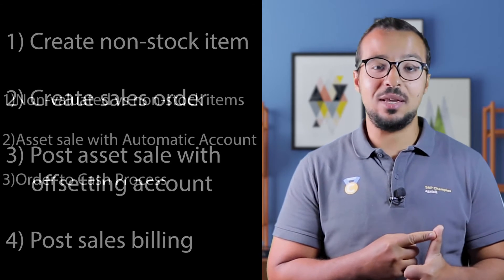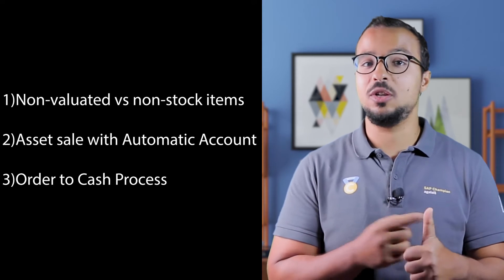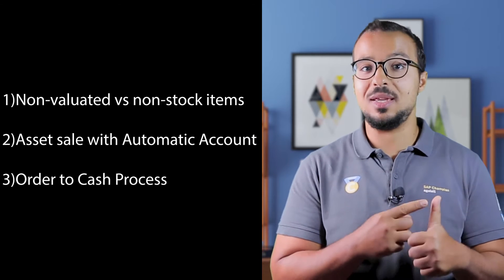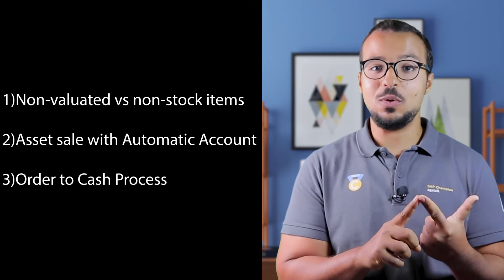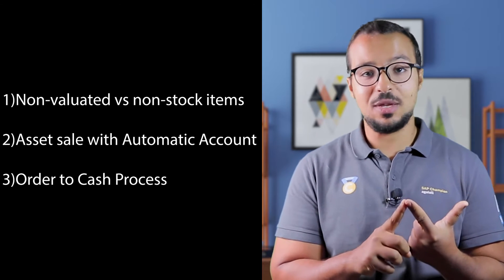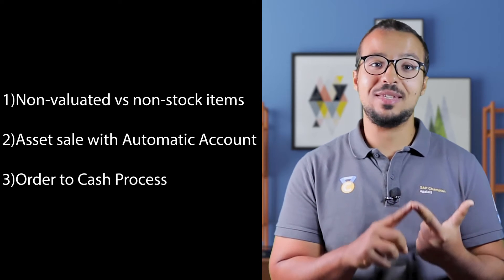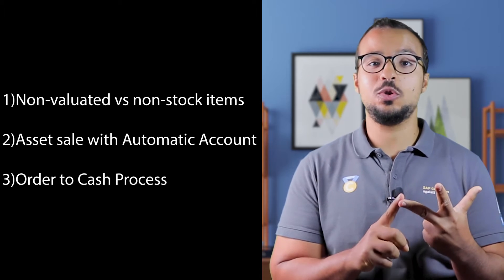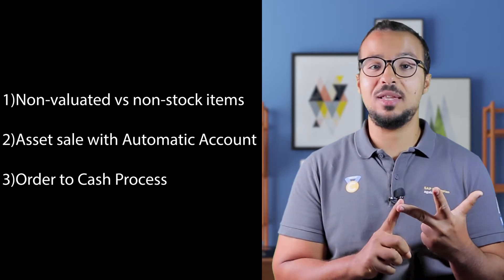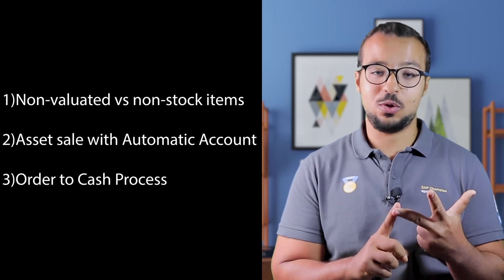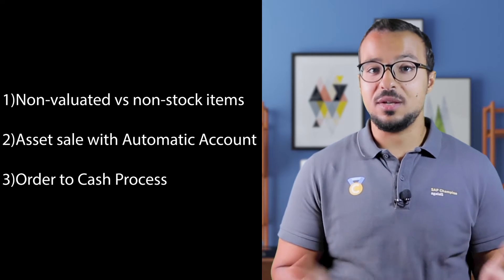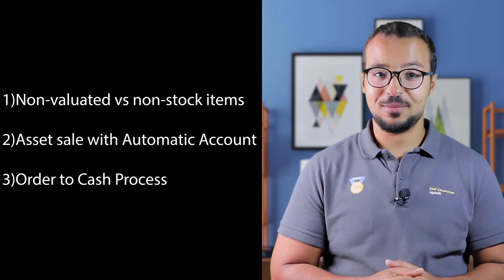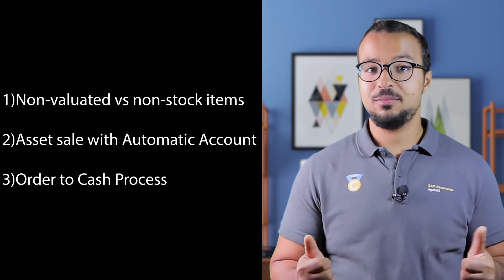The first prerequisite video is where I explained the difference between non-stock and non-valuated items, and demonstrated how to create and use both in SAP S/4HANA. The second video is where I explained and demonstrated the process of fixed asset sale with automatic offsetting entry. The third video is the order-to-cash process, where I explained and demonstrated how to sell any item from stock. If you have not yet watched these three videos, pause here, go watch them, and then come back.